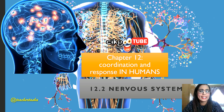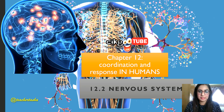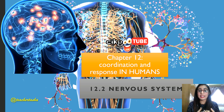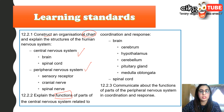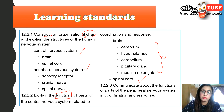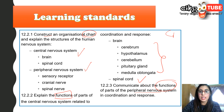Welcome back to the channel. Today we are going to look at subtopic 12.2, which is the nervous system, still under the chapter on coordination and response in humans. The learning standard is that you should be able to construct an organizational chart to explain the structures of the human nervous system, which includes the central nervous system and the peripheral nervous system, and to explain the function of parts of the CNS related to coordination and response.